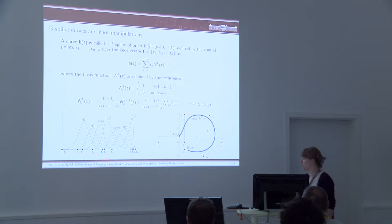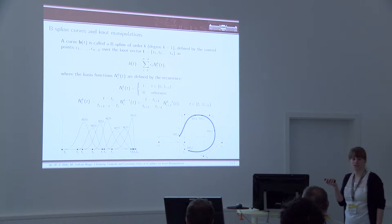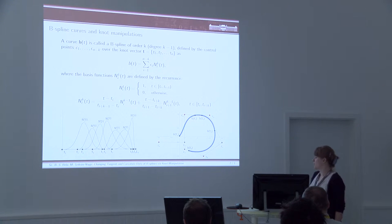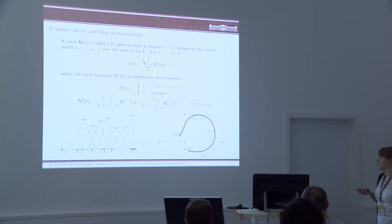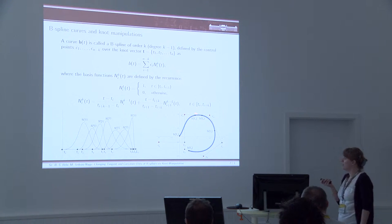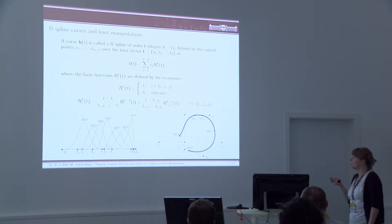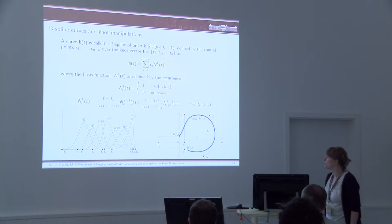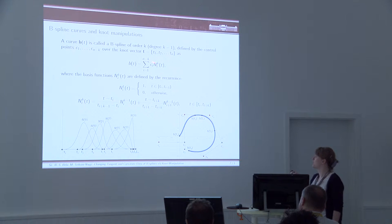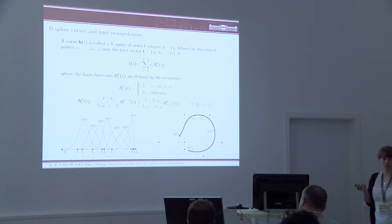If you look at the picture here, you can see how these basis functions are connected with our node values. The node values live on the x-axis and appear in the recurrence relation that defines our basis curves, the B-spline basis set. These node values play a role in the parametrization of our curve.